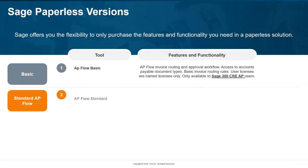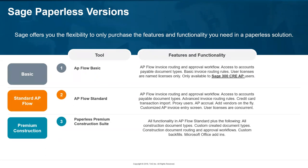Just a couple of things. There are different versions of SAGE Paperless out there, and each version adds a few different features and functionality. Right now, they offer three packages of SAGE Paperless: SAGE Paperless Basic, AP Flow Basic — which is currently only available to SAGE 300 Construction and Real Estate AP flow module users — and then we have AP Flow Standard and the Premium Construction Suite. They all have the basic AP flow functionality, so you can route invoices, approve invoices, and view documents that are AP related. Additional functionality gets added on with each upgrade that you make.